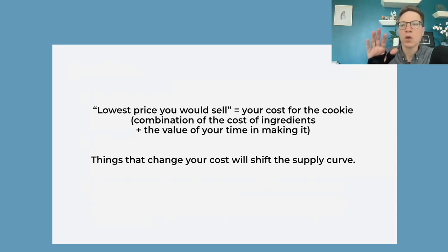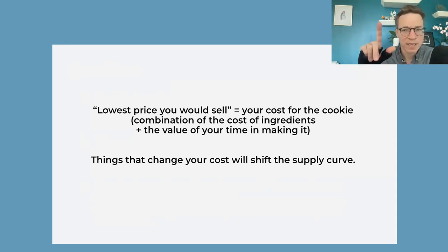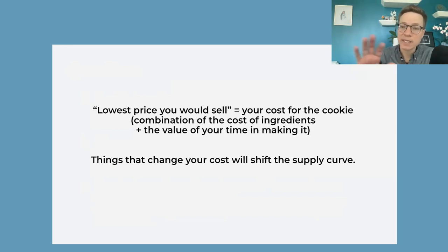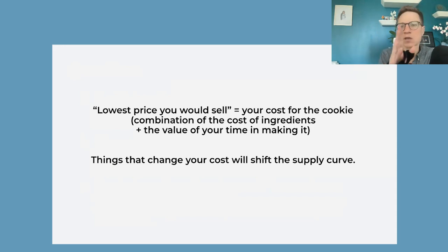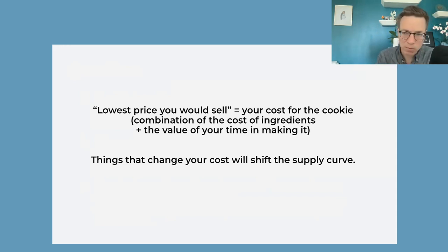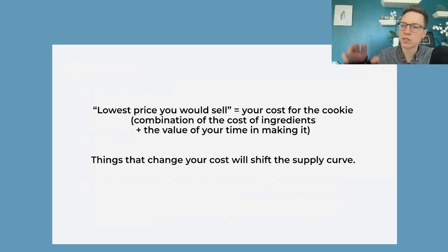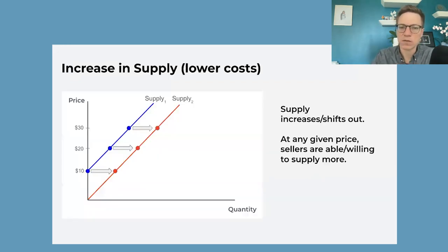The supply curve basically represents the relationship between price and quantity in a moment in time. As things change, as the fundamentals of supply change — which is going to be related to cost — that curve will shift. Just like with the demand curve, which represents the relationship between price and quantity at a moment in time: as the fundamentals change, as people's tastes change or the number of buyers changes, ultimately that curve shifts.